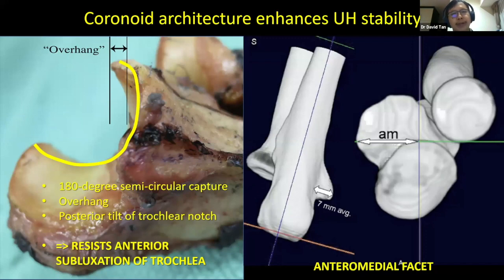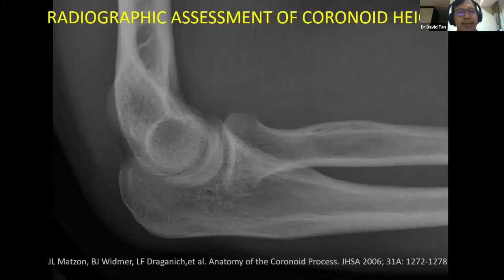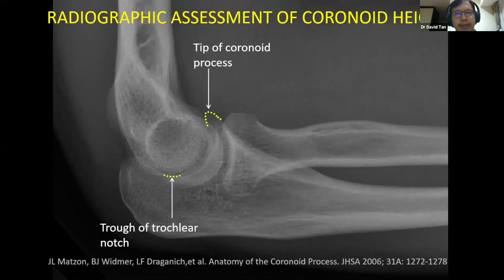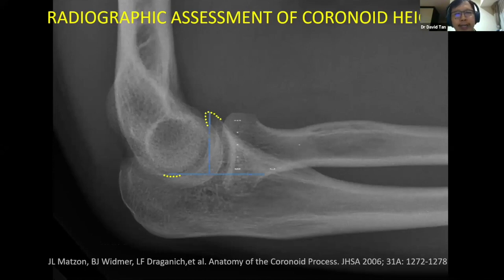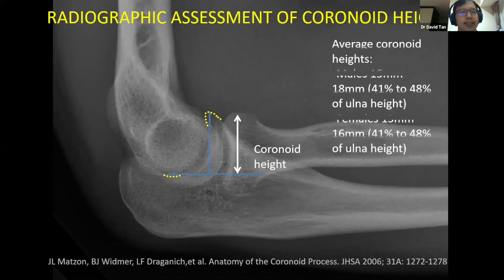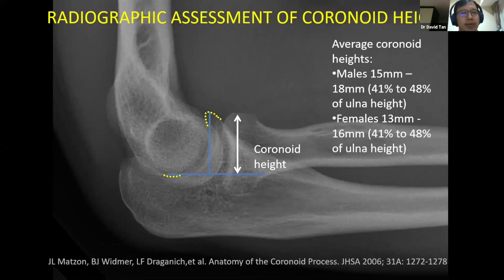The height of the coronoid and hence the size of coronoid fractures may be simply evaluated on a well-taken lateral radiograph. By identifying the tip of the coronoid process and the trough of the trochlear notch, one can obtain a coronoid height measurement. In Caucasian males, the average height range is about 15 to 18 millimeters, and in females 13 to 15 millimeters. Based on this measurement, we can apply the Regan-Morrey classification to assign a fracture type.